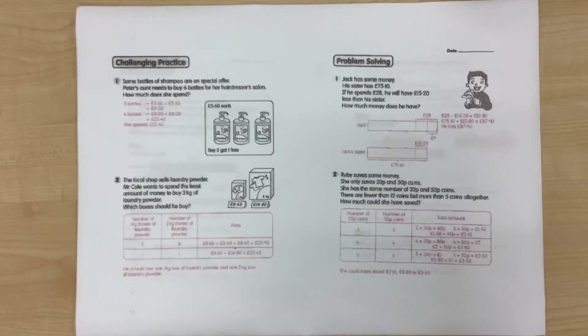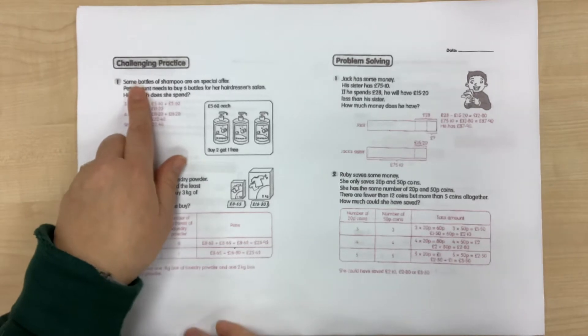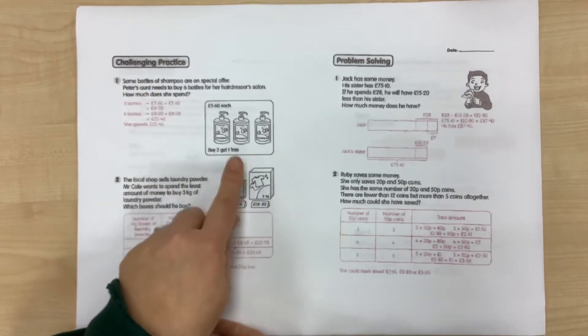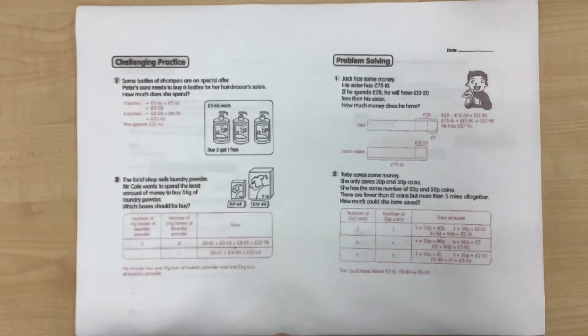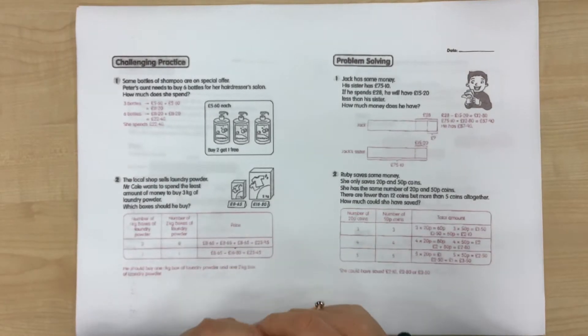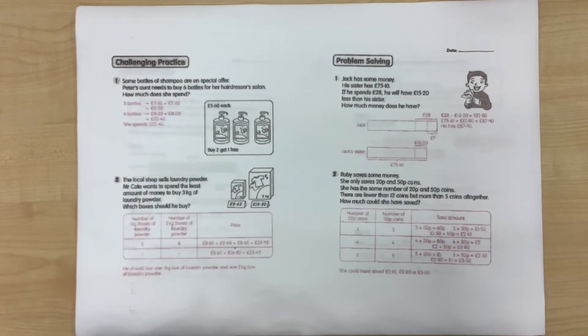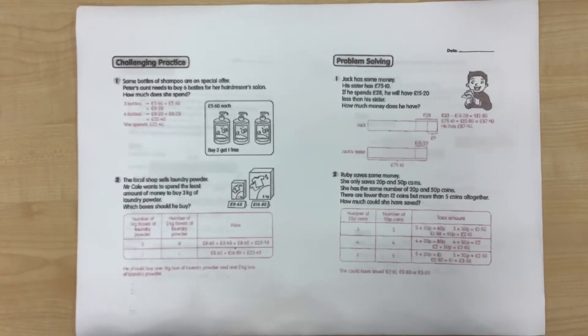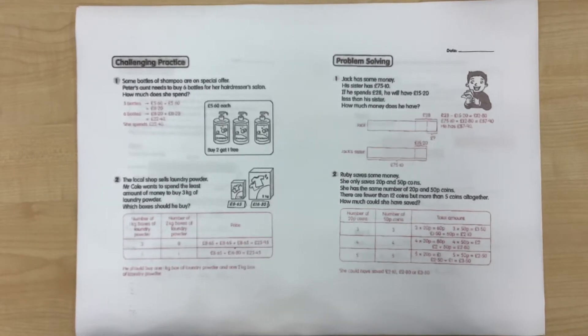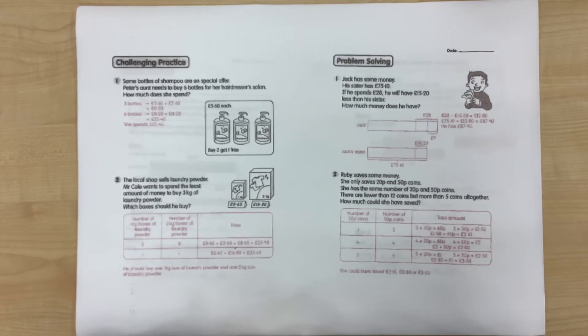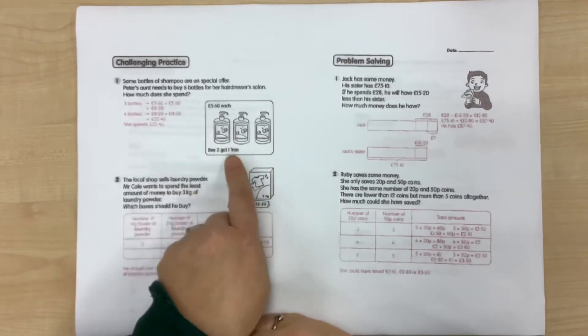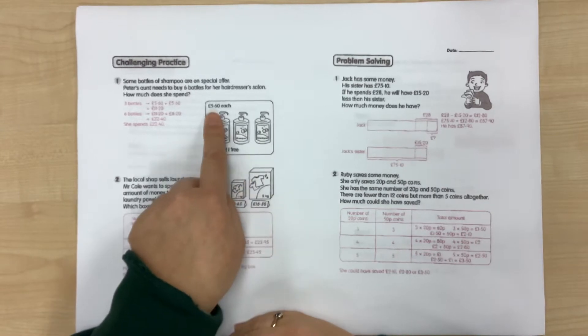I will go through a couple of examples. So the first question in challenging practice I want to talk to you about because it highlights the importance of making sure that you read every single piece of information in a question. Some bottles of shampoo are on special offer. Peter's aunt needs to buy six bottles for her hairdresser salon. How much does she spend? They cost £5.60 each.